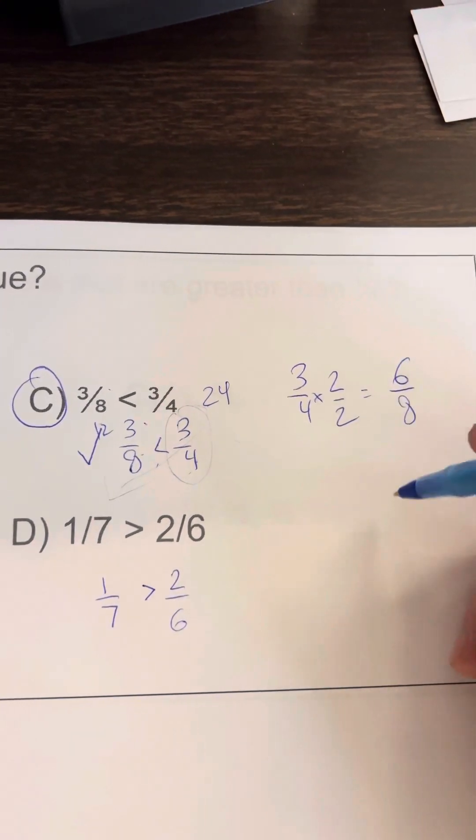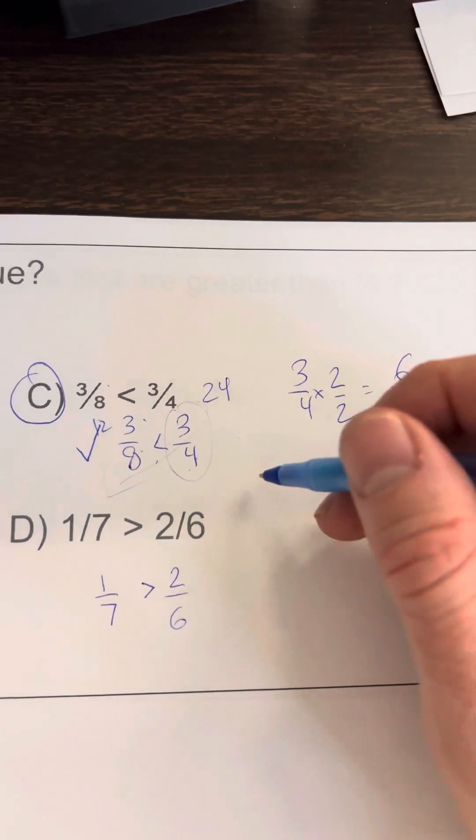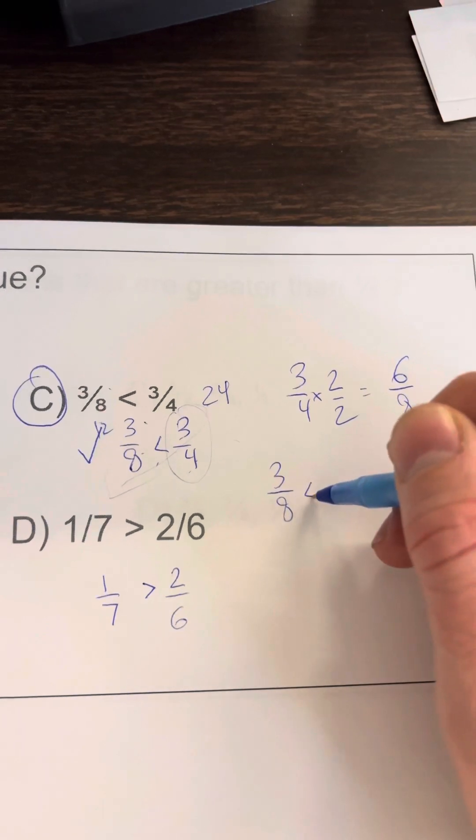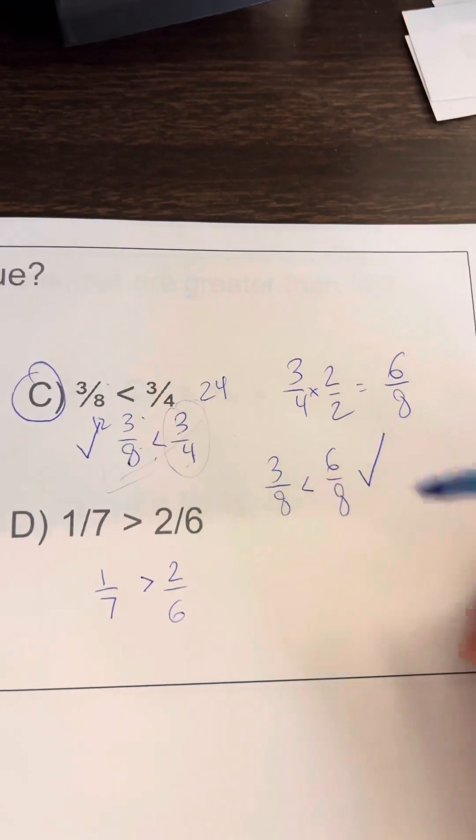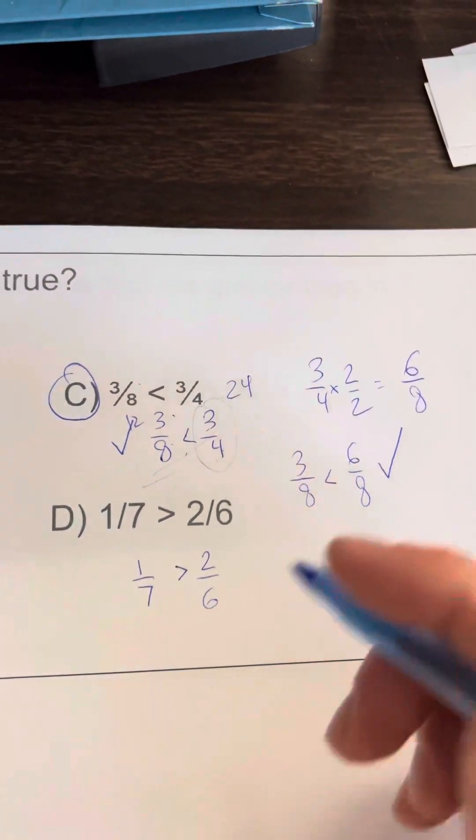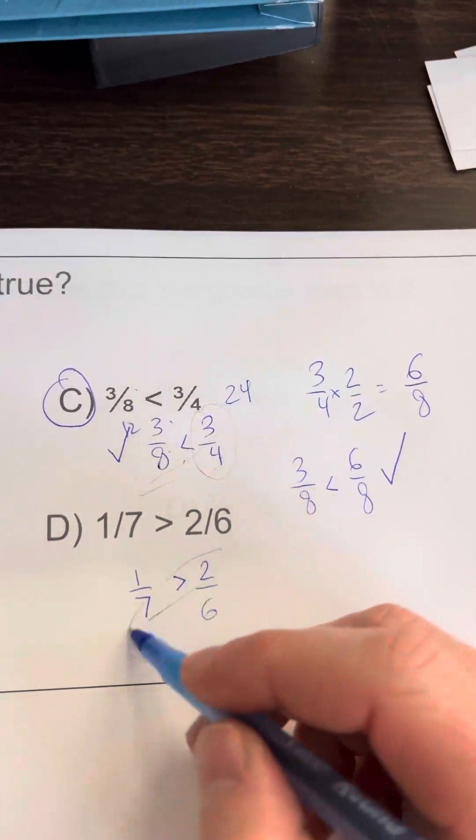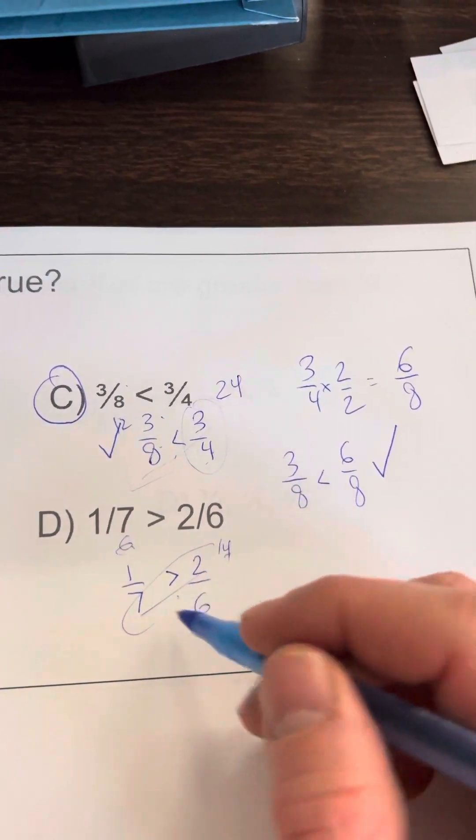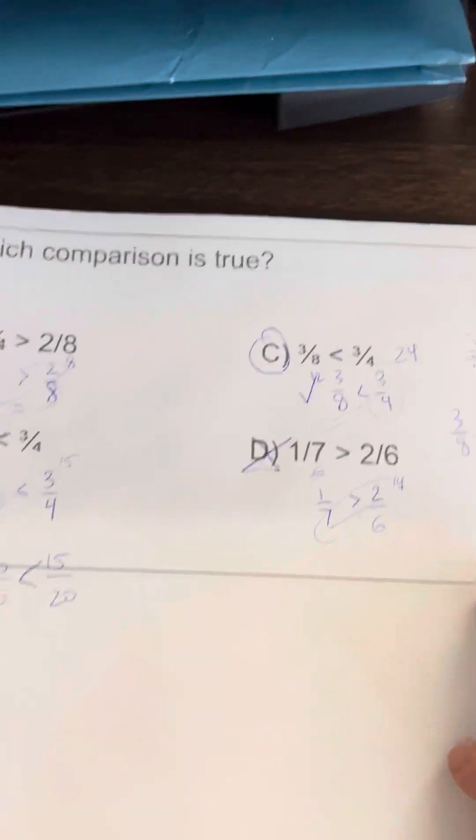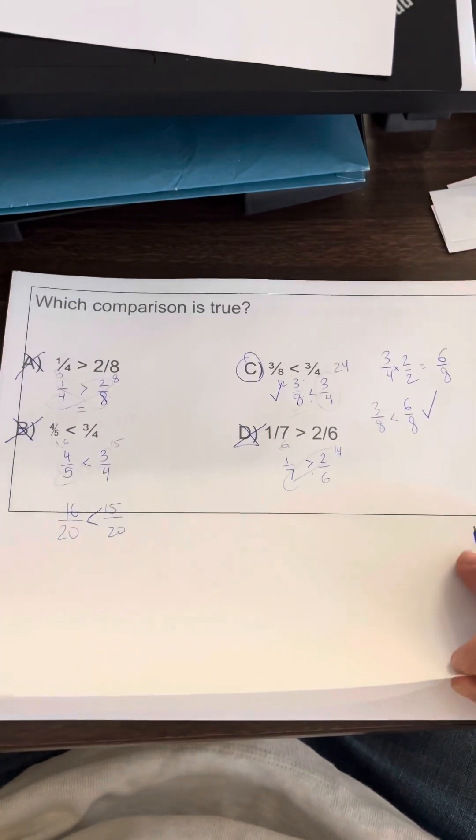Let's see, if we look at D just to be sure: this is 14, this is 6. Six is not greater than 14. All right, so that is that.